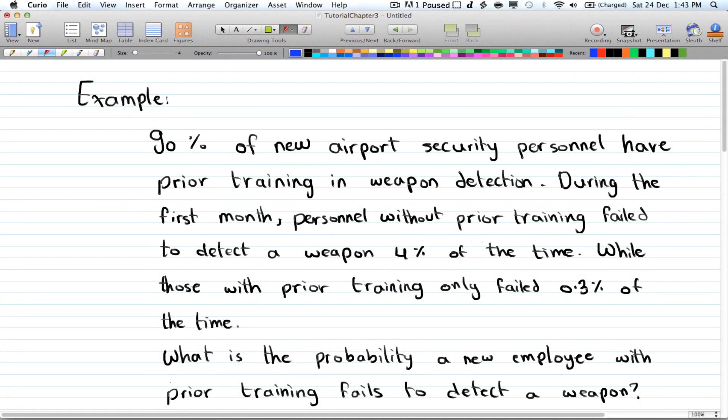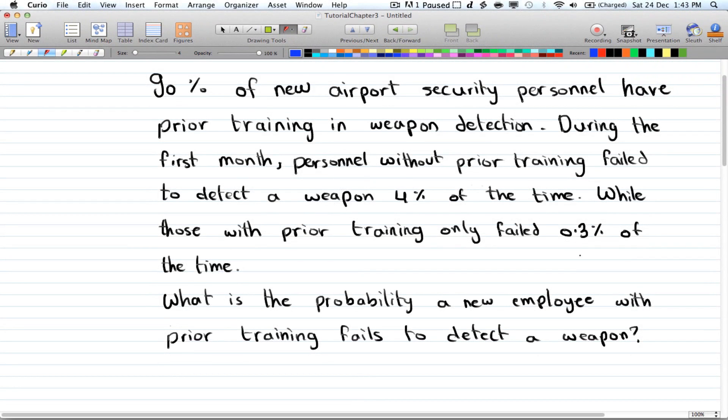Alright, so here we have 90% of new airport security personnel have prior training in weapon detection. During the first month, personnel without prior training failed to detect a weapon 4% of the time, while those with prior training only failed 0.3% of the time. So what is the probability a new employee fails to detect a weapon?